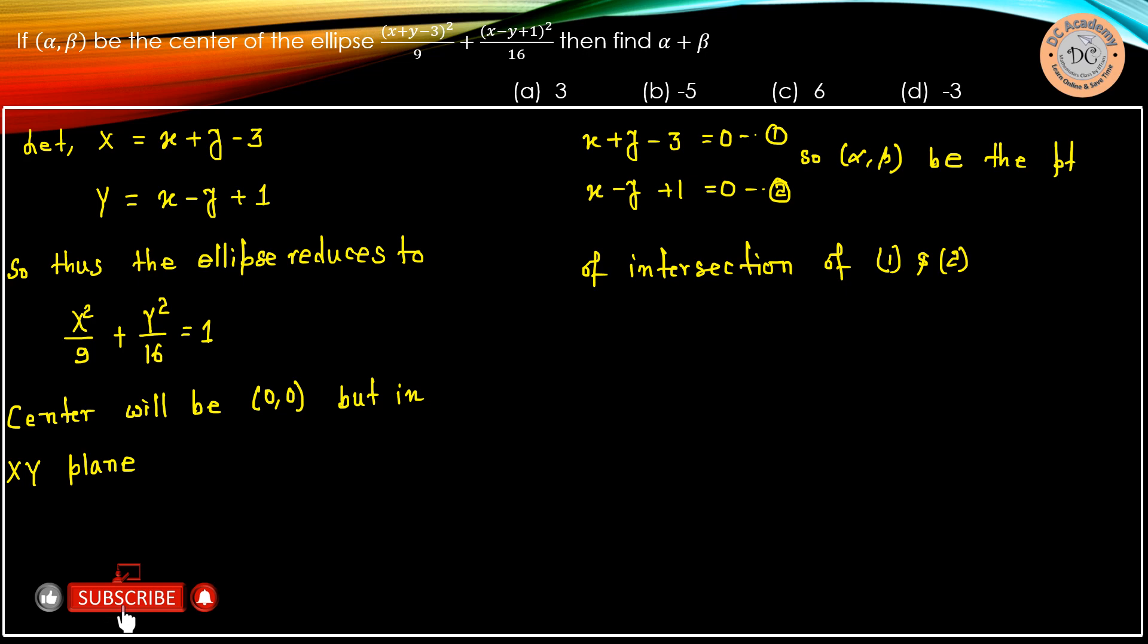Now notice that if we add equations 1 and 2, the y terms get cancelled. So 2x minus 2 equals 0, which implies that x is equal to 1.